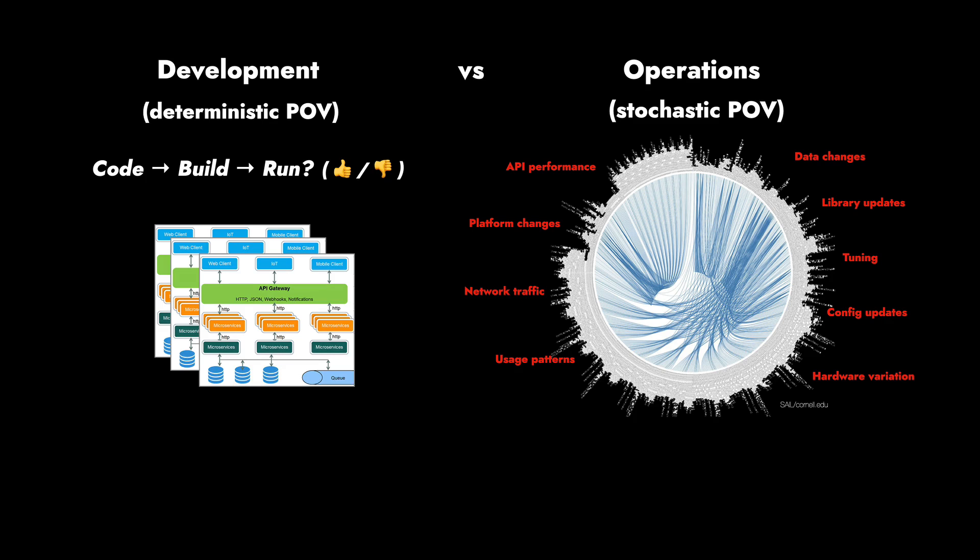We realize the sprawl of this—things have entered into the complex. There are all these things we can't change, or that change without us knowing: API performance from external services, hardware variation of cloud platforms, network traffic, usage patterns, what our users decide to do, library updates, data changes. These constant things are moving around in the system that make it impossible to predict exactly what's going to happen. We're constantly tailoring these systems—they're never fit for purpose or one size fits all. We're constantly changing things to meet our business requirements or current performance characteristics or usage patterns.